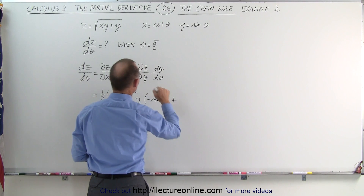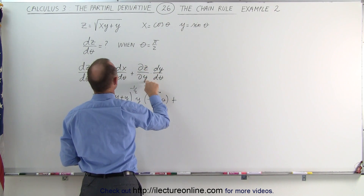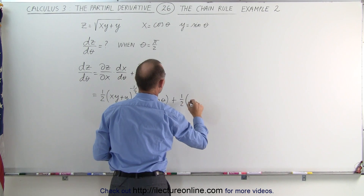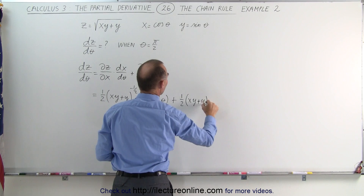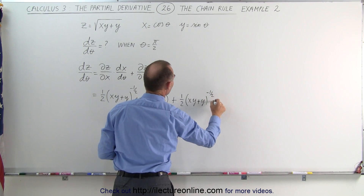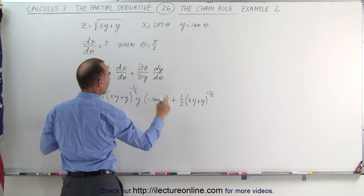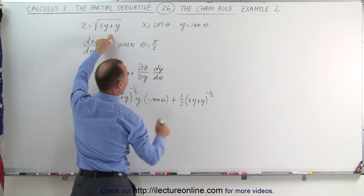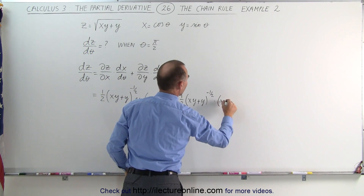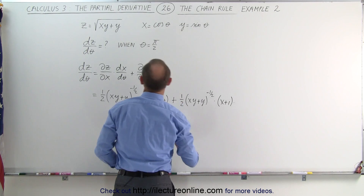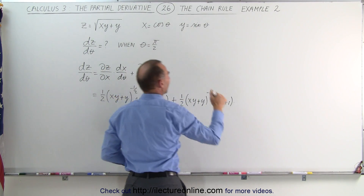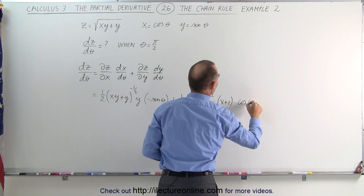We add to that the partial derivative of z with respect to y, which is 1/2 times (x·y + y) to the negative 1/2 power, times the derivative of what's inside with respect to y — in this case that would be x plus 1. And we multiply that times the derivative of y with respect to theta. The derivative of sine is equal to cosine of theta.